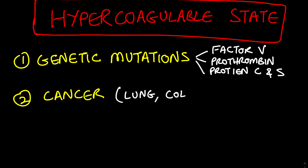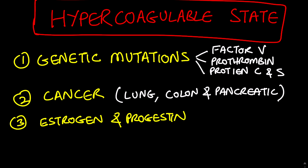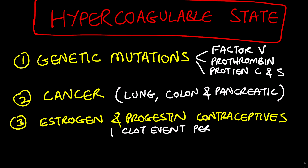Cancer is a well-recognized one. About 20 percent of patients who develop a clot have cancer, and sometimes a cancer is discovered after the clot has formed. Any kind of cancer can do this, but lung, colon, and pancreatic cancer are amongst the most common culprits. Another well-recognized risk factor for a hypercoagulable state is the use of contraception containing estrogen and progestin. However, even while using them, the absolute risk still remains low — an estimated one clot event per 10,000 women per year, which is a very low number.